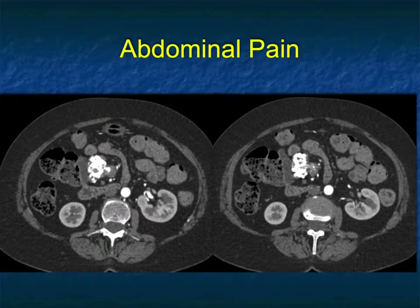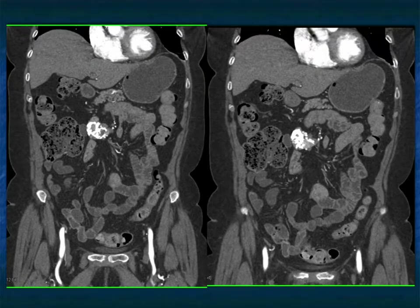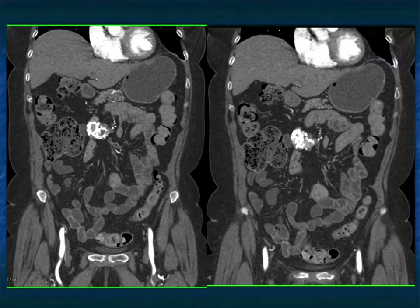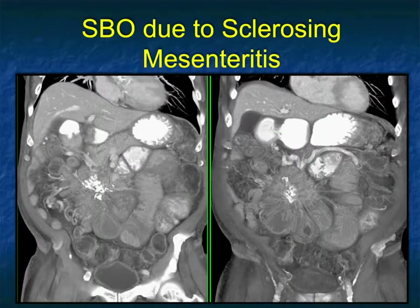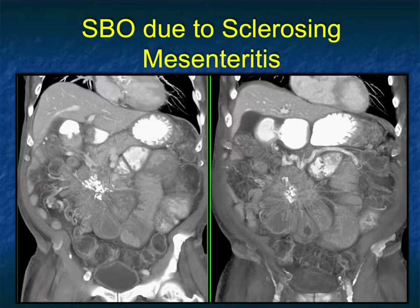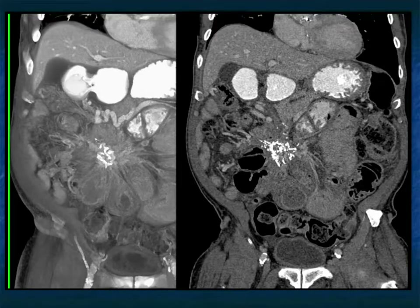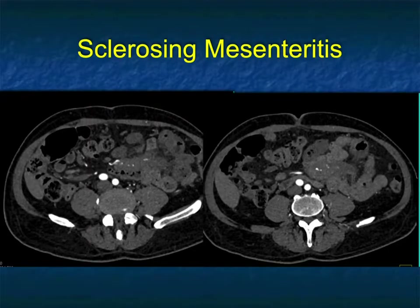Another patient with abdominal pain — very similar to the prior case, with very dense, coarse calcifications. This was sclerosing mesenteritis as well. Here you don't see the mass infiltrating as much, and there's no bowel obstruction, but it's a dense mass in the mesentery. The differential could include tuberculosis, treated lymphoma, or some granulomatous disease. Volume rendering nicely shows the calcified mass and vessels. Another example presented with small bowel obstruction, with adhesions and markedly dilated small bowel — very similar to the first case and very challenging.